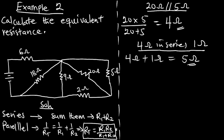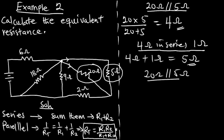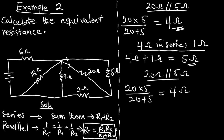Now looking at the updated diagram, are the 20-ohm resistor and this 5-ohm resistor in series or parallel? They are parallel to each other, because at the junction the current splits — one portion goes through each branch, so the magnitudes differ. The 20-ohm resistor is parallel to the 5-ohm resistor, giving us (20 × 5) / (20 + 5) = 4 ohms again.